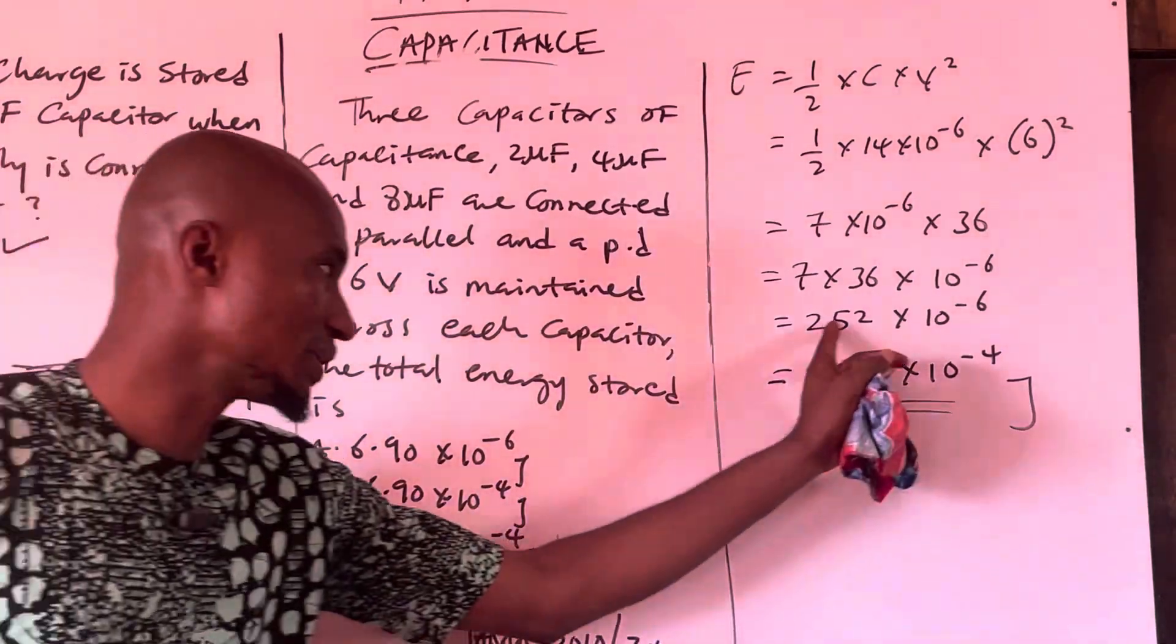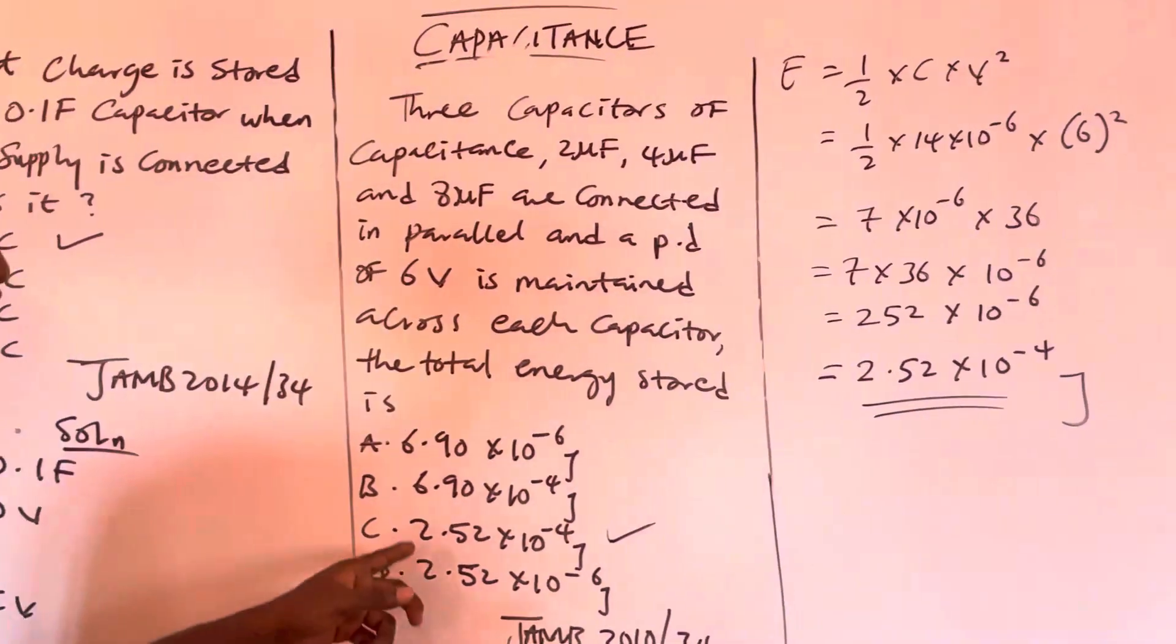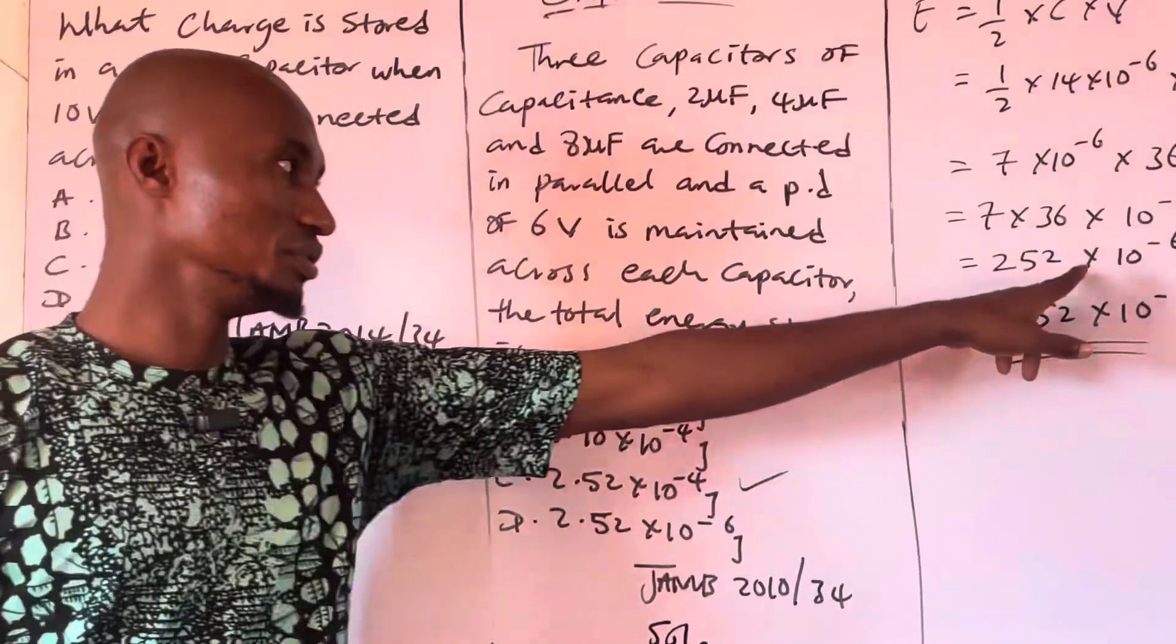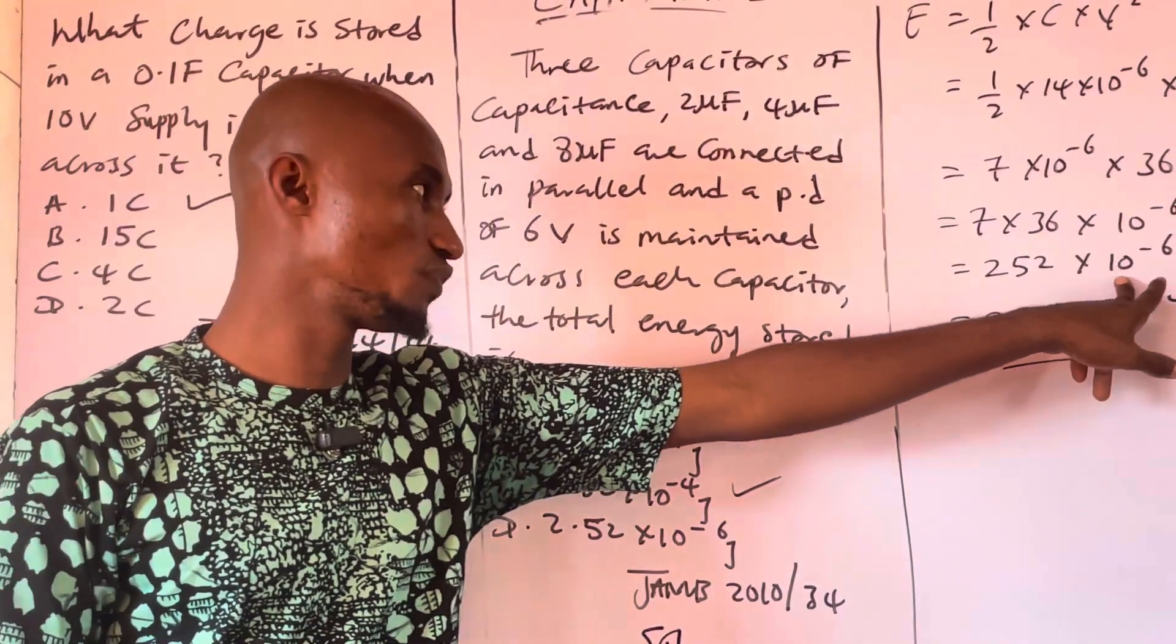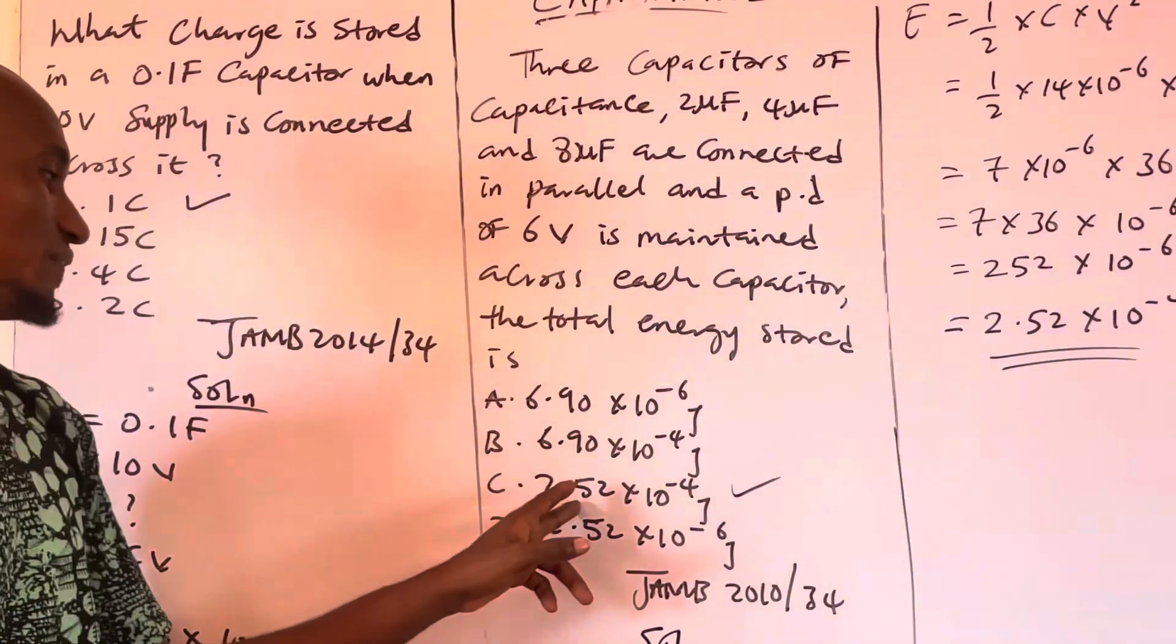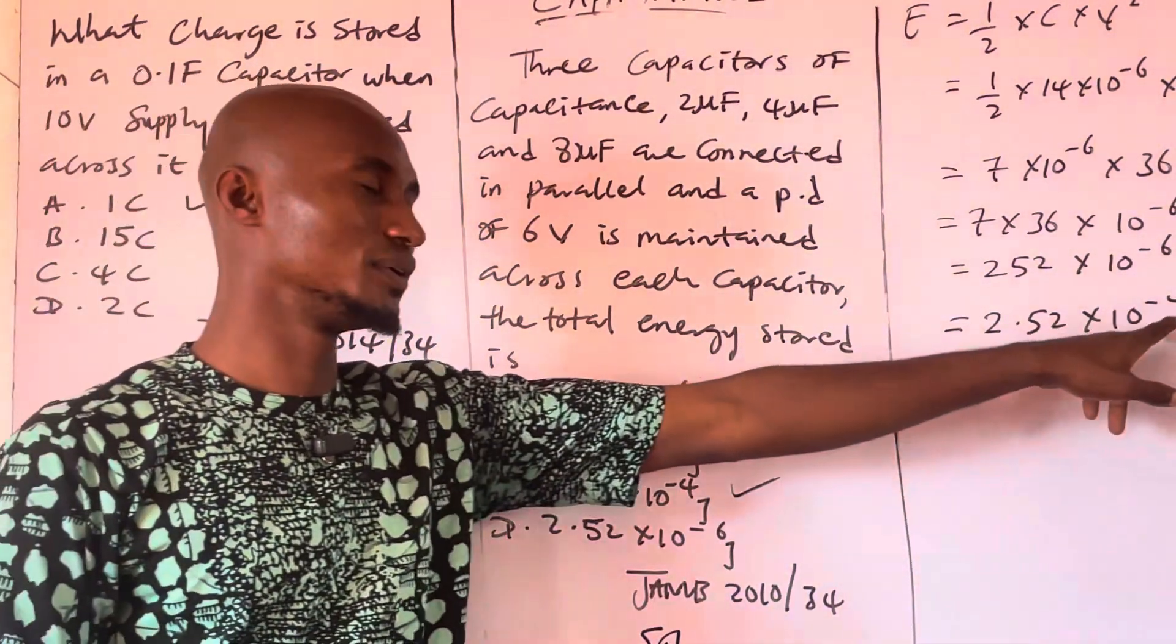When we apply the standard form, 2.52 times 10 to the minus 4 is correct.